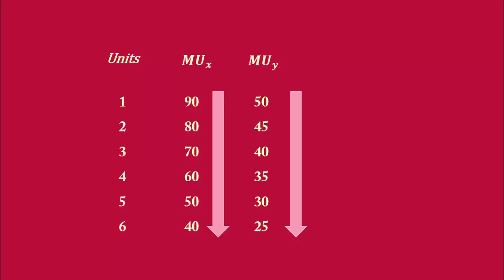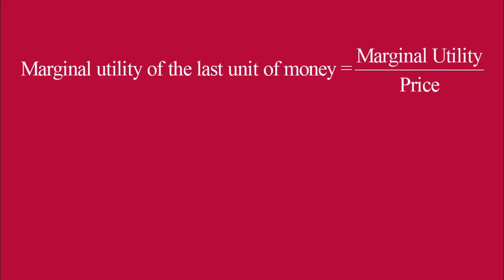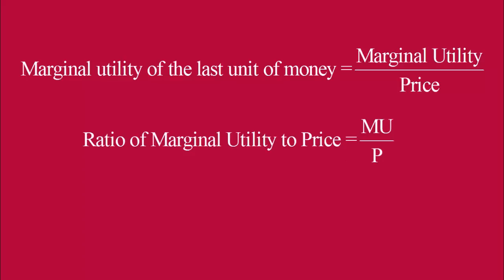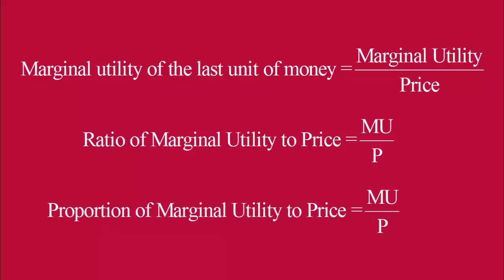The next step is to see what is the marginal utility of the last unit of money. It is very essential to know this to understand the law. In plain language, it means marginal utility divided by price. Price can otherwise be understood as the number of units of money. It is also known as the ratio of marginal utility to price, or proportion of marginal utility to price. Its actual interpretation is the marginal utility of one unit of money. We shall use this to complete the table.